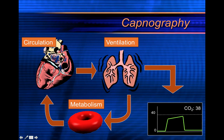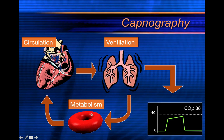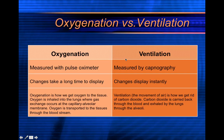We've already discussed this component: circulation, ventilation, and metabolism — the three things that are required to get a capnography value, and the three things that capnography can actually tell you about. You need to be circulating blood to move CO2 to the lungs. In the lungs you need to move the CO2 out to get your capnography value, and you'll move oxygen in, which then needs to be metabolized at the cellular level to produce CO2 to circulate back to the lungs again.